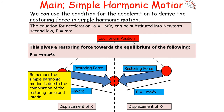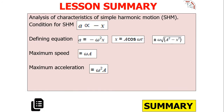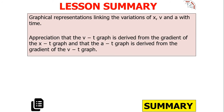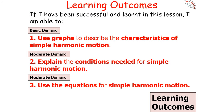So in today's lesson we've understood simple harmonic motion and can recall the equations, including the condition for SHM. We can sketch graphical representations linking x, v, and a with time, and appreciate that the v-t graph is derived from the gradient of the x-t graph, and the a-t graph from the gradient of the v-t graph — as shown by differentiation. I hope you've enjoyed today's lesson and can now use graphs to describe the characteristics of simple harmonic motion.